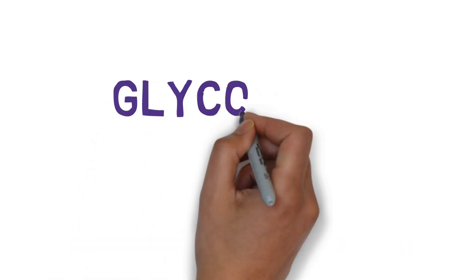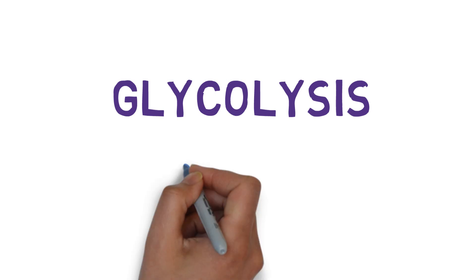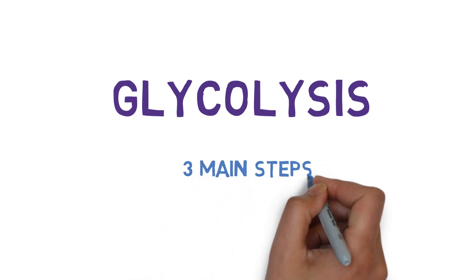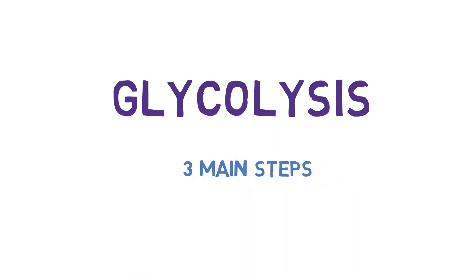Now we are coming to the glycolytic pathway. The glycolytic pathway has three main steps. These are irreversible reactions that happen in one direction. There are also some other reversible reactions which can go in both directions, but they are not as important.